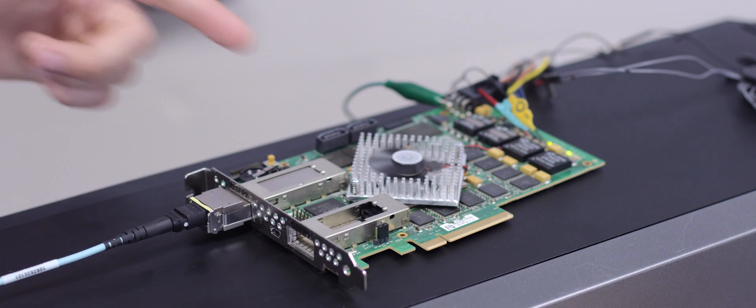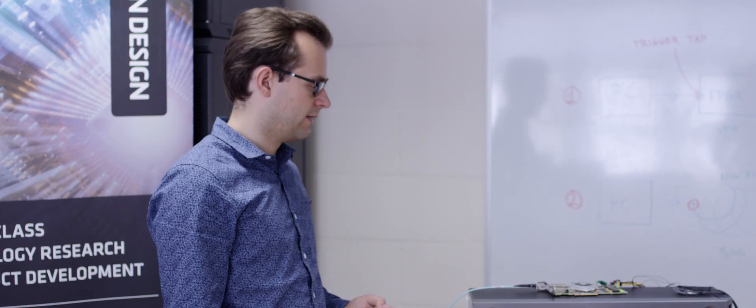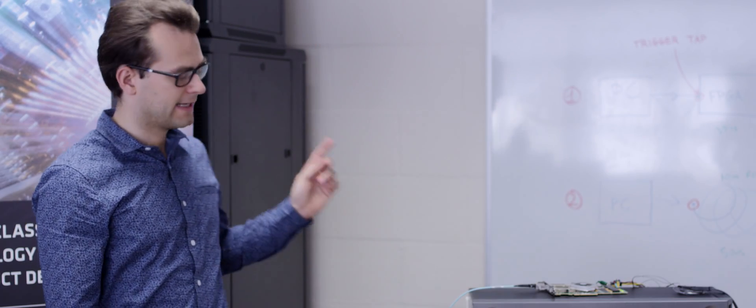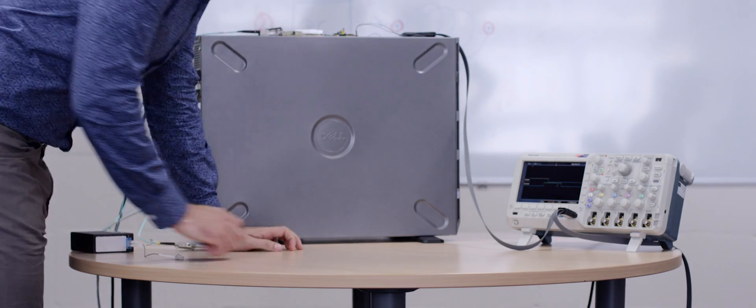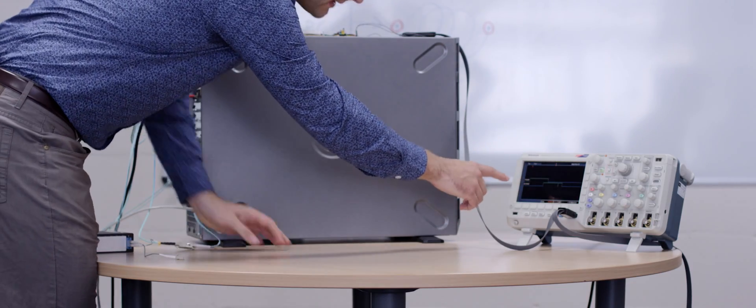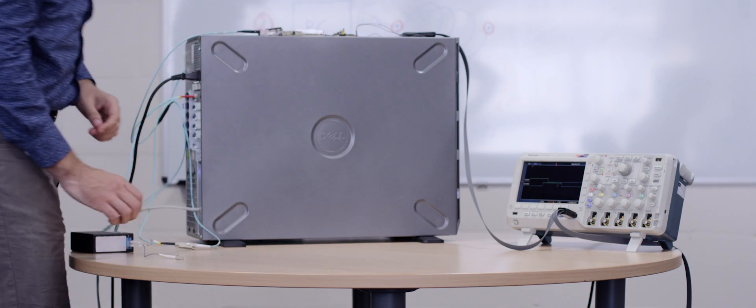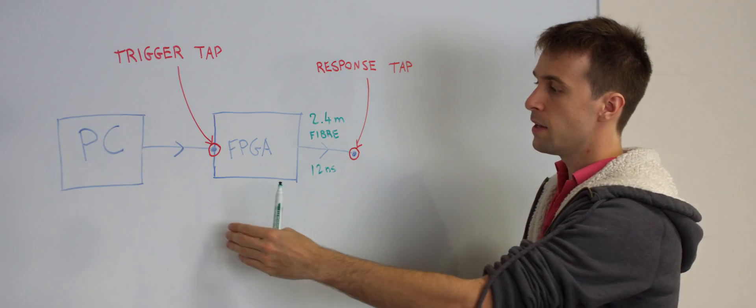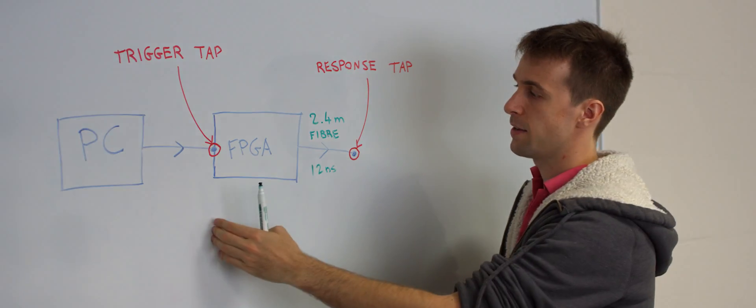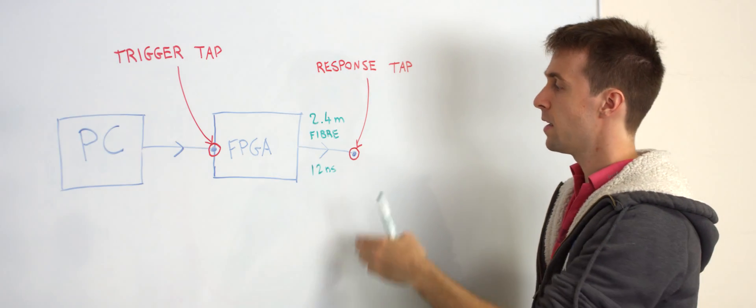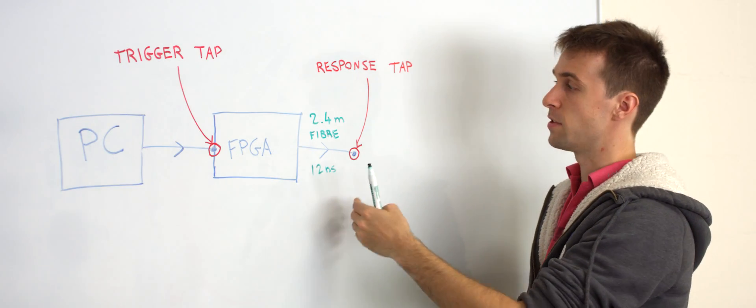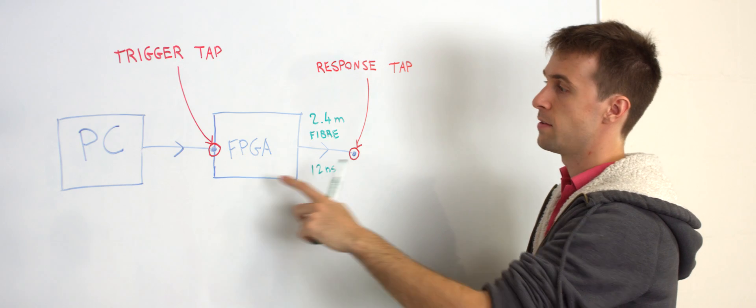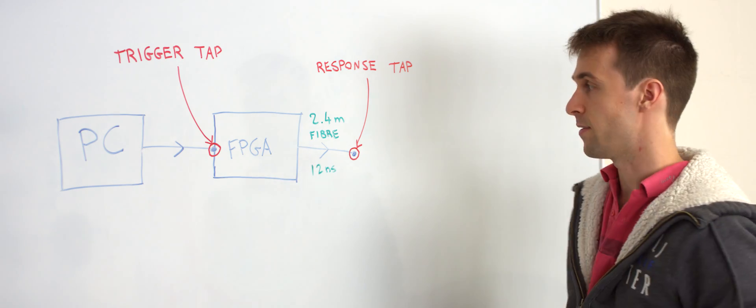So now we've got the FPGA set up in transponder mode so it reacts to packets coming in from the PC as fast as possible. Here on the scope you can see the trigger and response packets and you can see that the response comes in up to about 47 nanoseconds after the trigger. The latency between the start of packet of the incoming packet and the start of packet of the response measured at the taps is 47 nanoseconds.